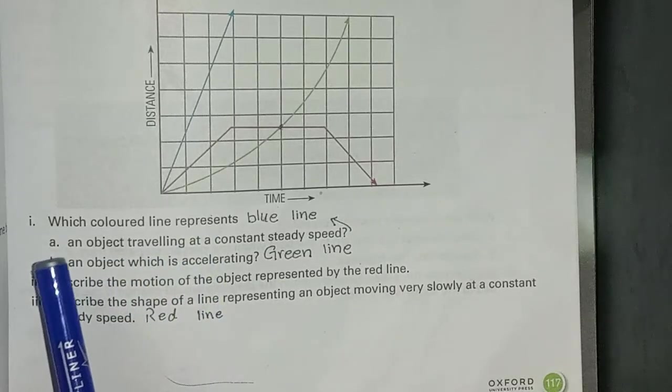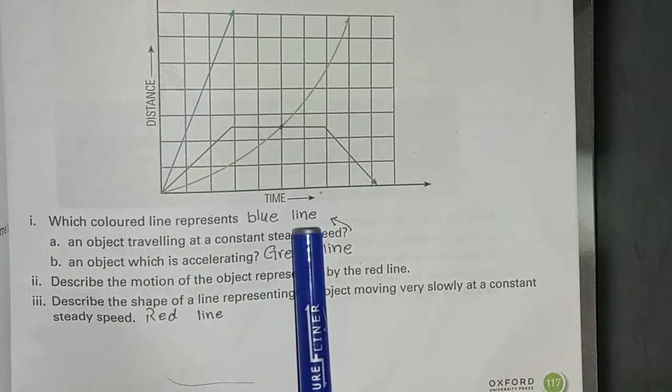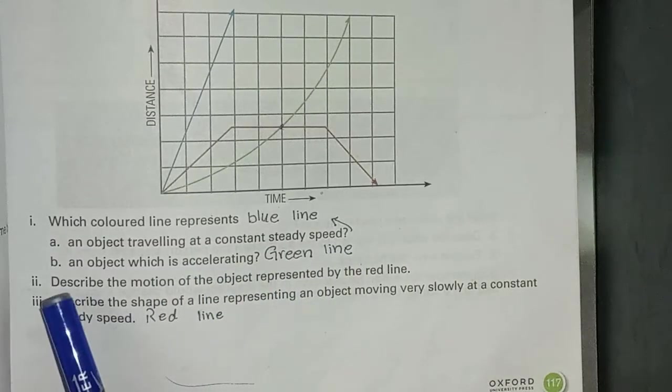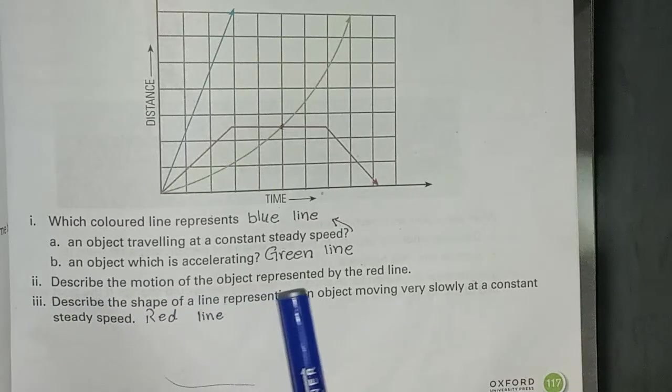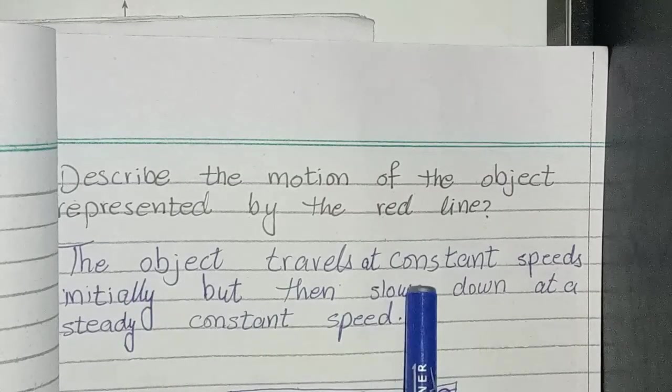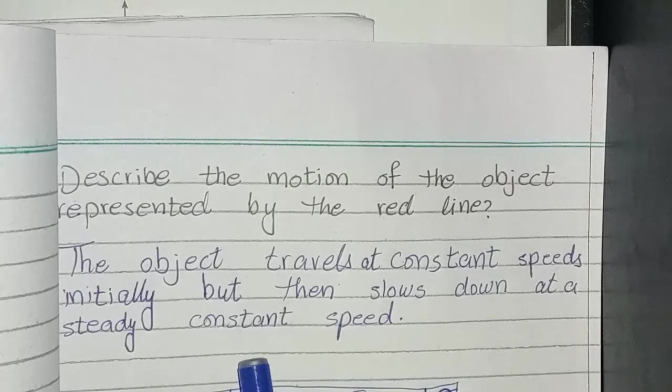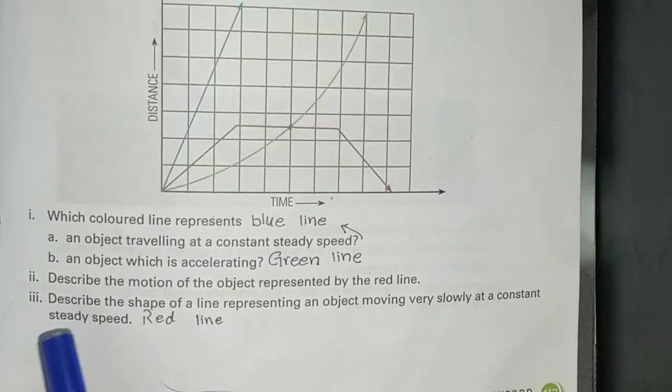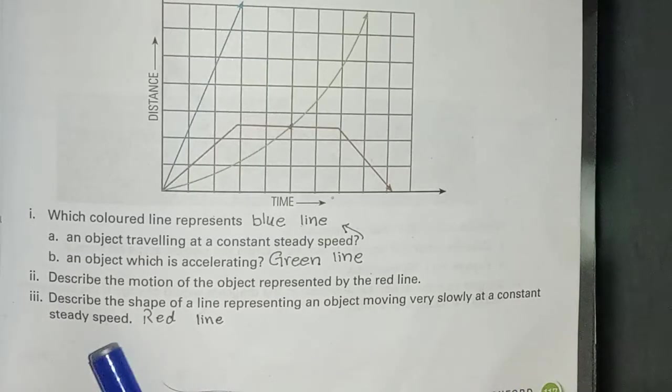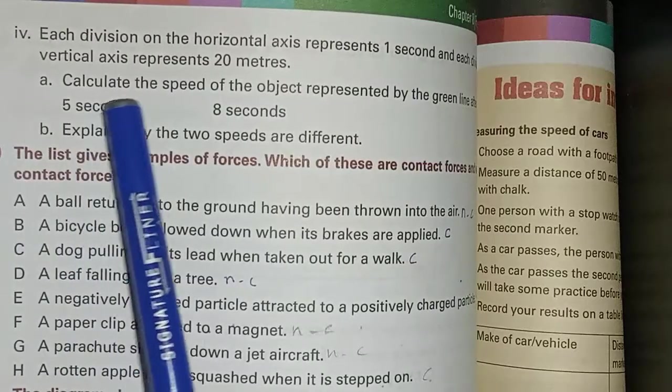First question: an object traveling at a constant steady speed? Blue line. Third question: describe the shape of a line representing an object moving very slowly at a constant steady speed. Red line.